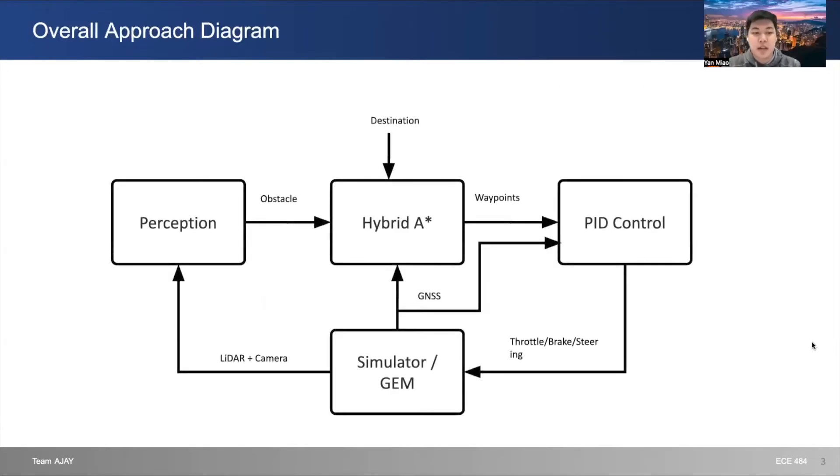The overall approach we use is a pipeline approach. We get sensor data from our physical vehicle, and those sensor data are processed by our perception unit which gives us obstacle information. The planner takes in that obstacle information along with other sensor data to generate a list of waypoints that the PID controller unit will follow.